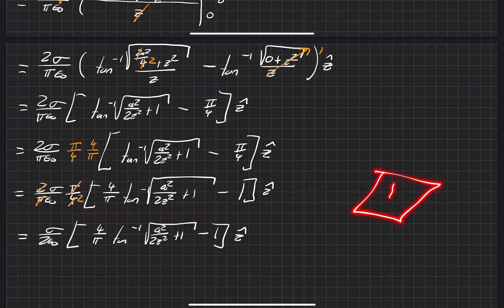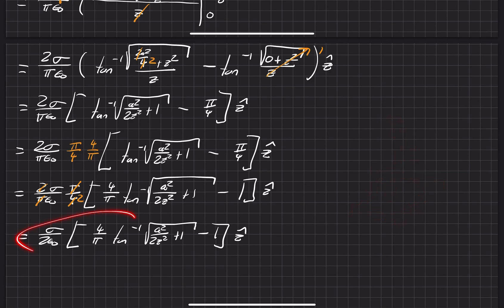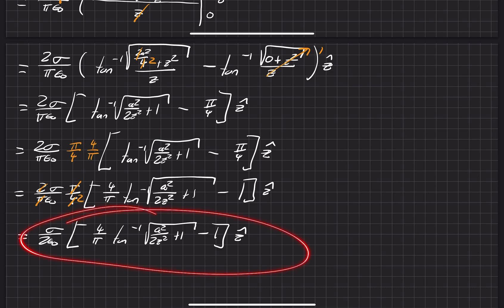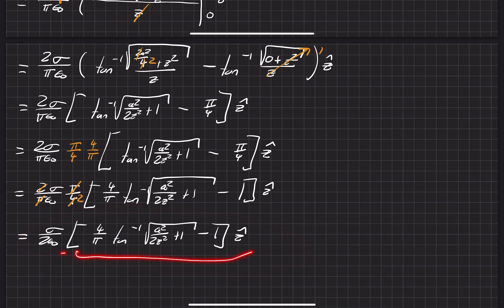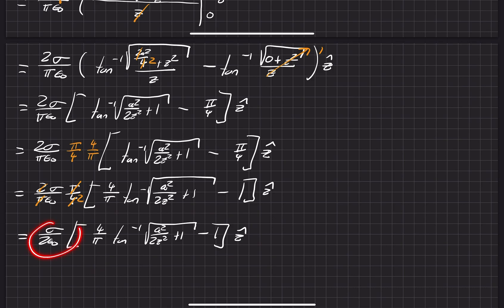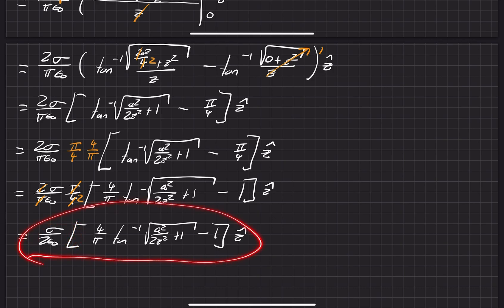This is our answer for the first part of the problem: the electric field at a point z above the center of a square patch. We'll use this in the next part of the problem to verify it's correct, since it hints at something really good.